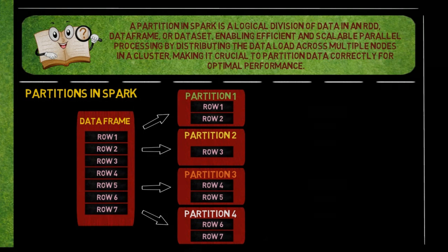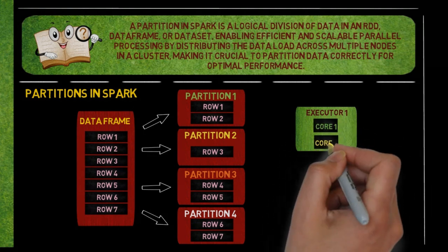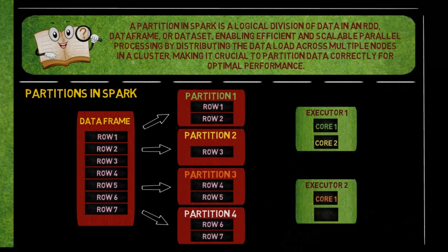Spark is a system that can handle big data by working on these partitions at the same time. Each piece of work done on a partition is called a task, and usually one task runs on one Spark core. Here we have two executors, each with two cores, which means all four partitions can be processed at once parallelly.